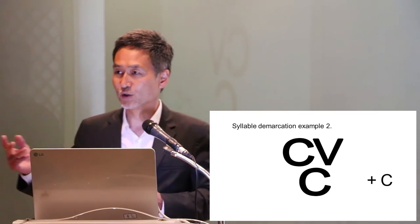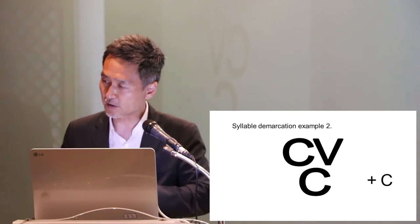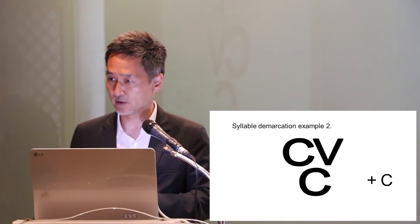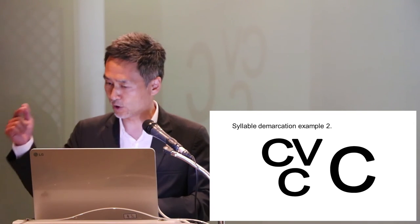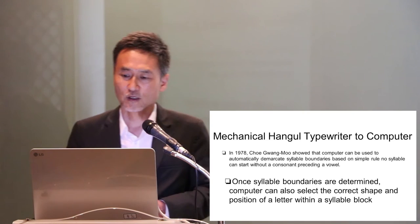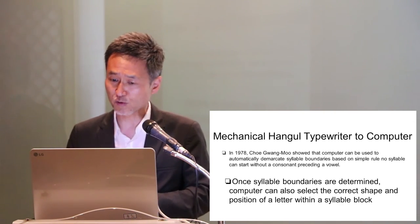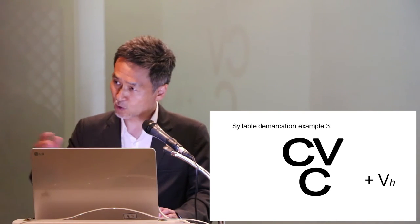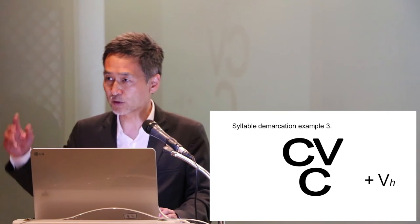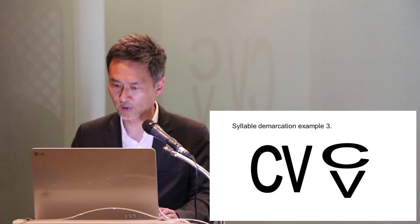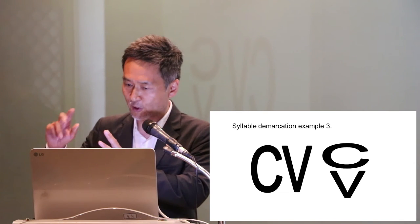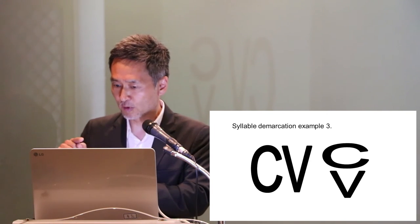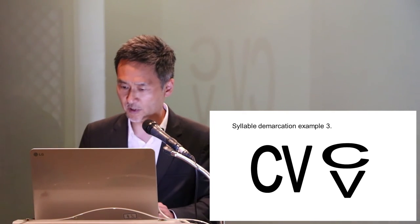If, on the other hand, the input after the consonant-vowel-consonant cluster is formed is another consonant, then the computer can confidently know that the initial syllable has been completed and starts a new syllable with the just-entered consonant. Once syllable boundaries are determined, the computer can also select the correct shape and position of a letter within a syllable block. For example, if the next input is a horizontal vowel instead of a vertical type, it shortens the consonant and places the vowel underneath it — the computer performs this kind of transformation automatically.